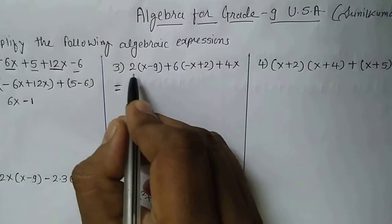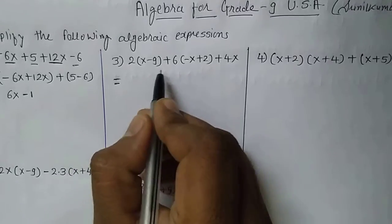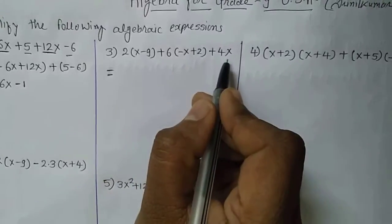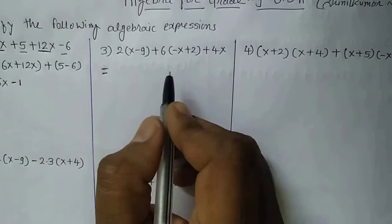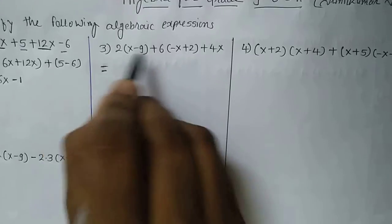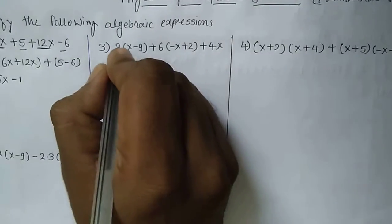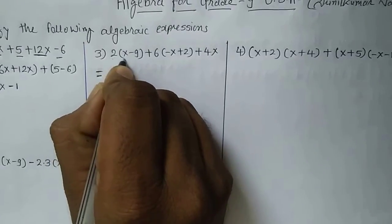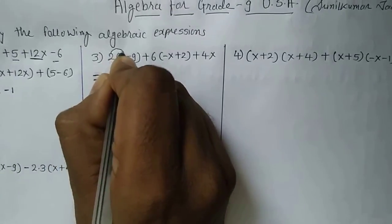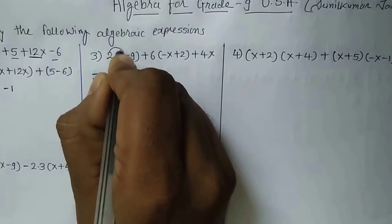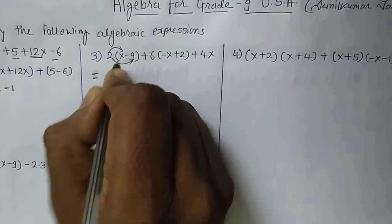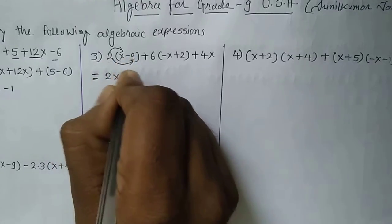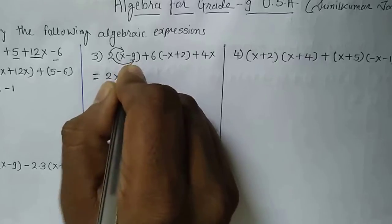Here you can see: 2 times bracket (x minus 9) plus 6 times bracket (minus x plus 2) plus 4x. First of all we have to expand the brackets. Let's see how to expand: this is 2 times bracket (x minus 9), so 2 will be multiplied by x as well as by 9. So that would be 2 times x, giving 2x, and minus 9 times 2 is 18, so it is minus 18.